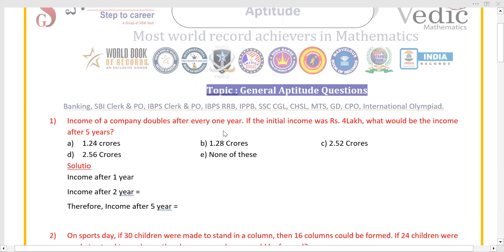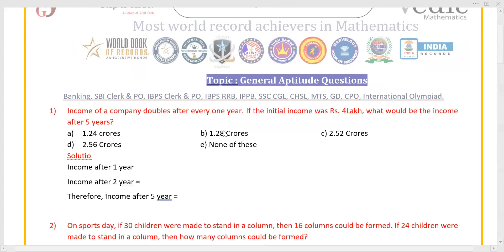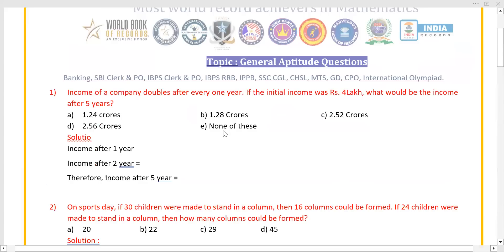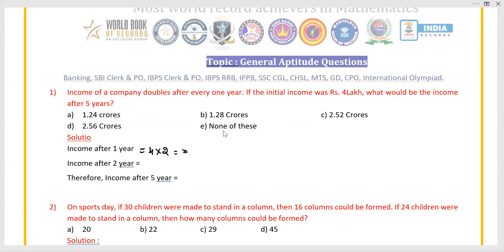See the first problem: the income of a company doubles after every one year. If the initial income was rupees 4 lakh, what would be the income after five years? Find out the value after one year. The initial amount is 4 lakh; after one year the amount doubles, so multiply with 2. The answer is 8 lakh.